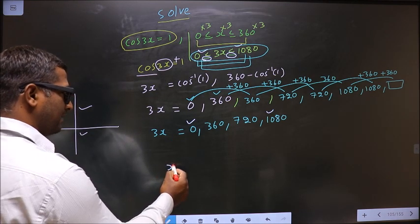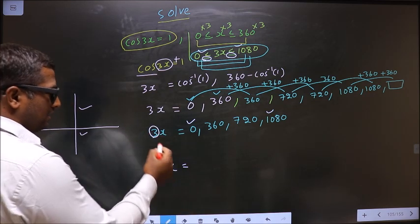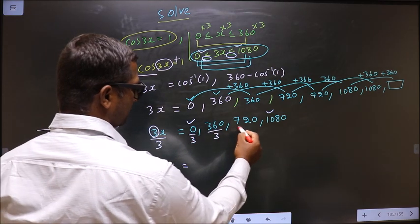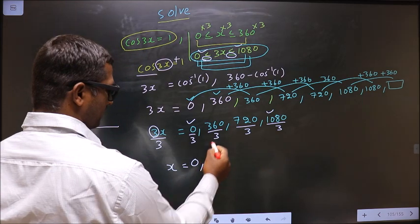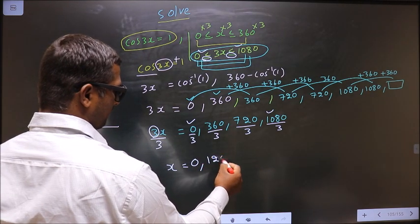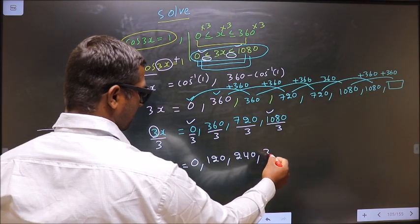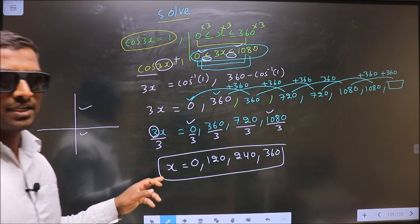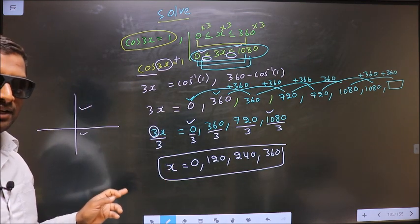Now to get the values for x, we should remove this 3. To remove this 3 we divide by 3. So we get 0, here 120, here 240, here 360. This is our answer. Am I clear?